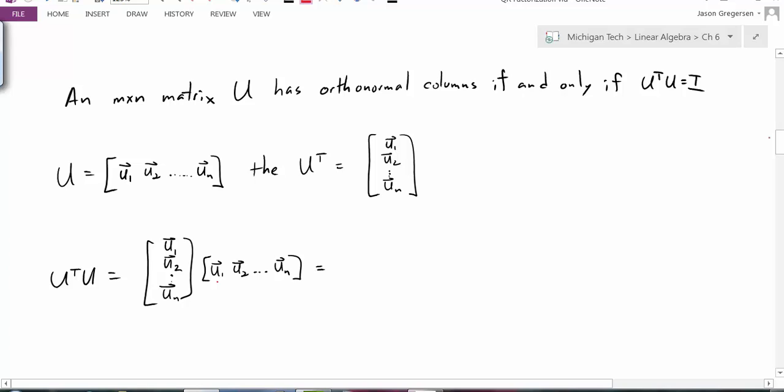We'll start by looking at an M by N matrix U, and we'll say that M by N matrix U has orthonormal columns if and only if U transpose times U is equal to identity. So let's take a quick little look at this to explore this.